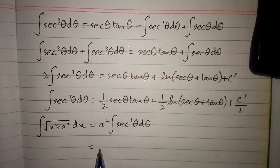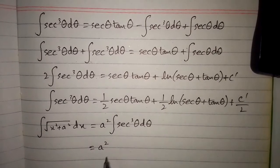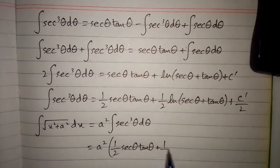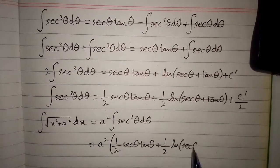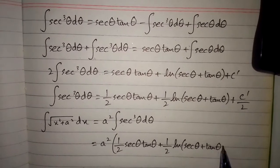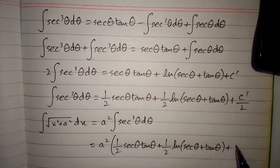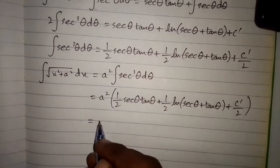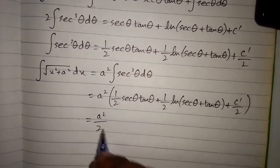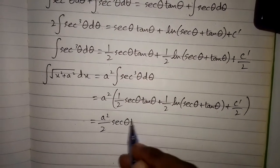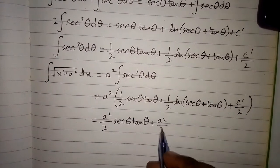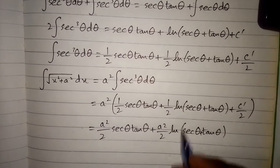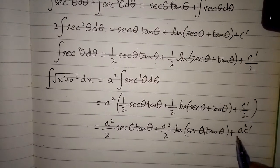Substituting the value of the integral of sec cubed θ, we have: one half times (sec θ tan θ plus ln|sec θ + tan θ|) plus C′ over 2. Multiplying by a squared, we get a squared over 2 times sec θ tan θ, plus a squared over 2 times ln|sec θ + tan θ|, plus a squared C′ over 2.